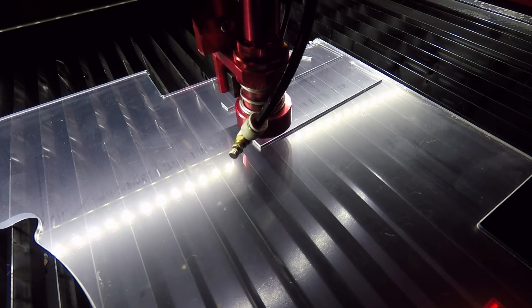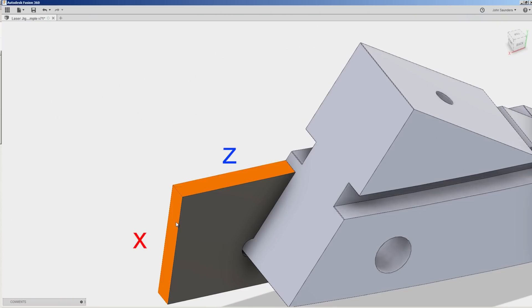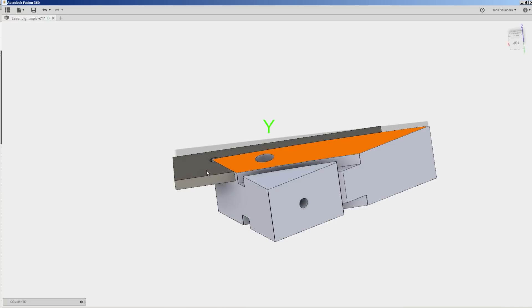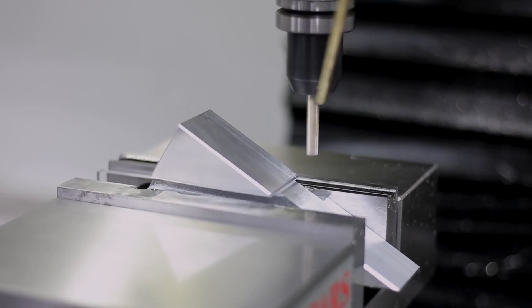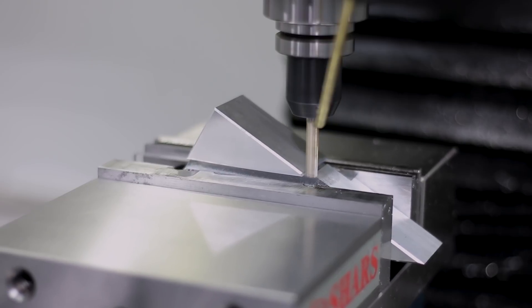You could also 3D print it, and that gave us a datum that we could probe off of and the confidence to know that when we drop this part in the vice we could have it accurately located to machine that final operation.